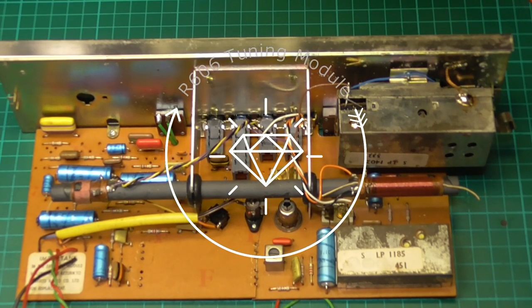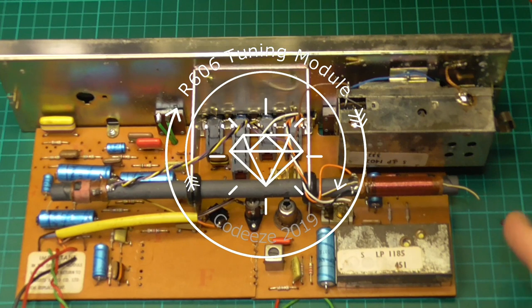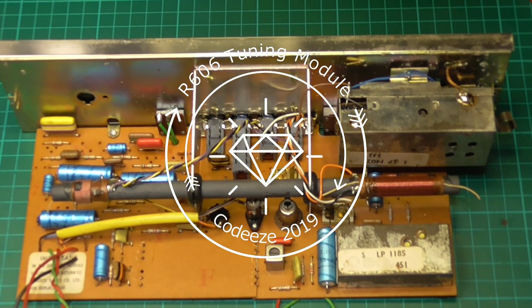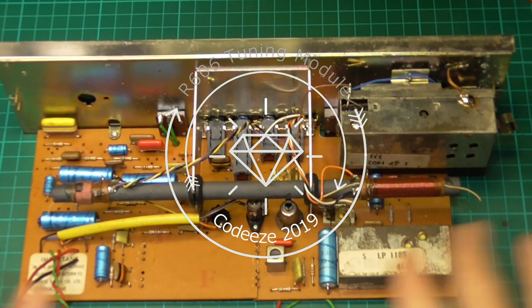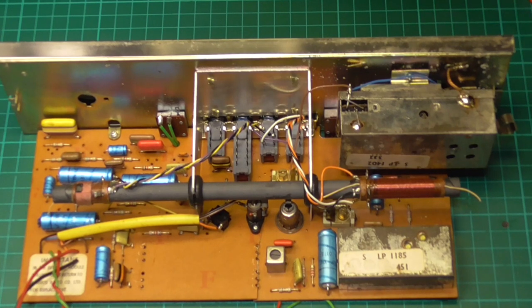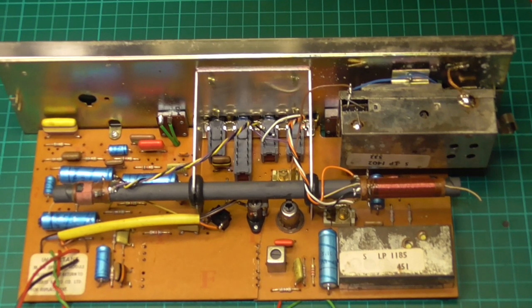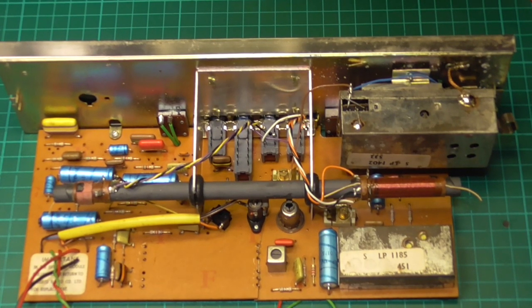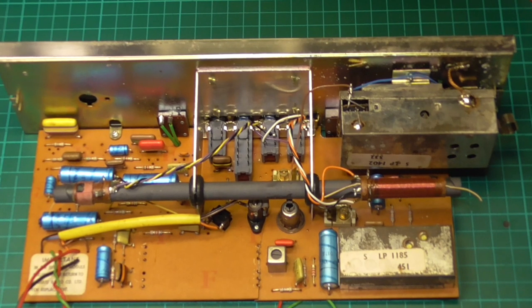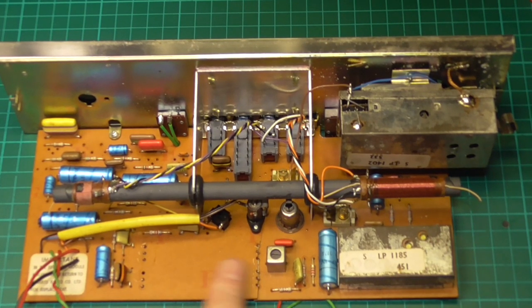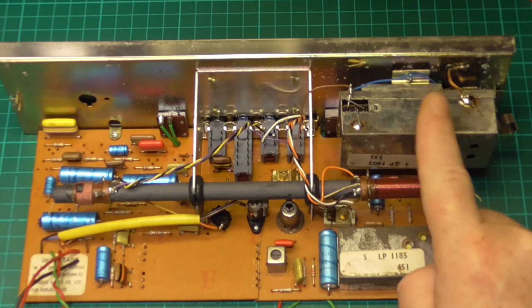Good evening, this is for you Daniel. This is an R606MB, or what's left of one. It's one that I've robbed for spares previously. It's just one of the donor sets I keep under the bench in case I need a part, like a module. I've already robbed one out of here, but this is your tuning module.